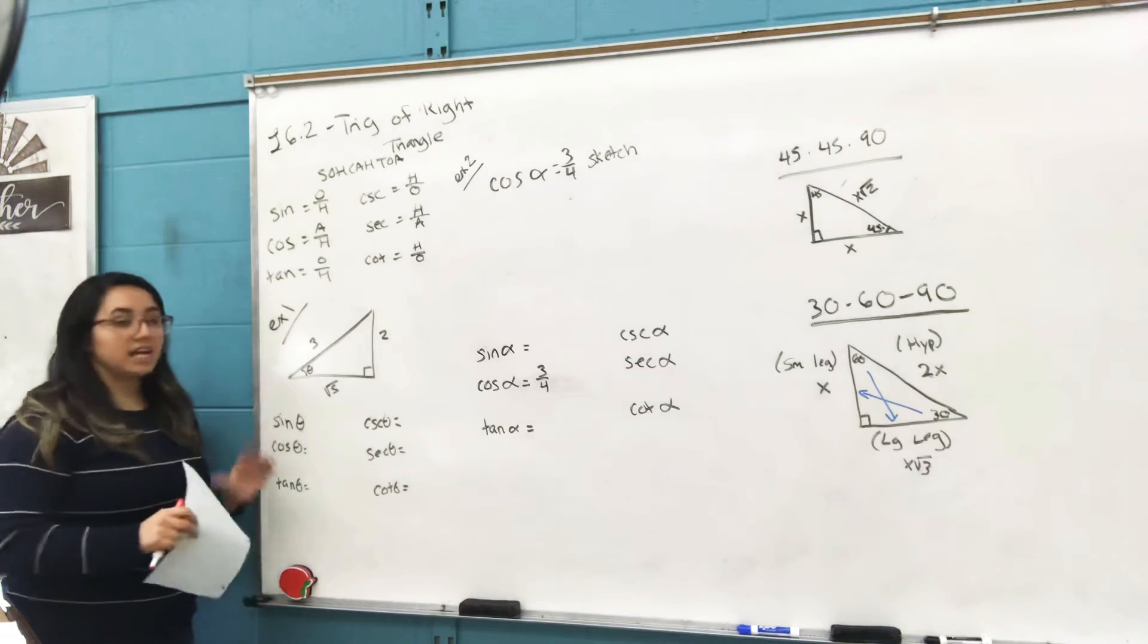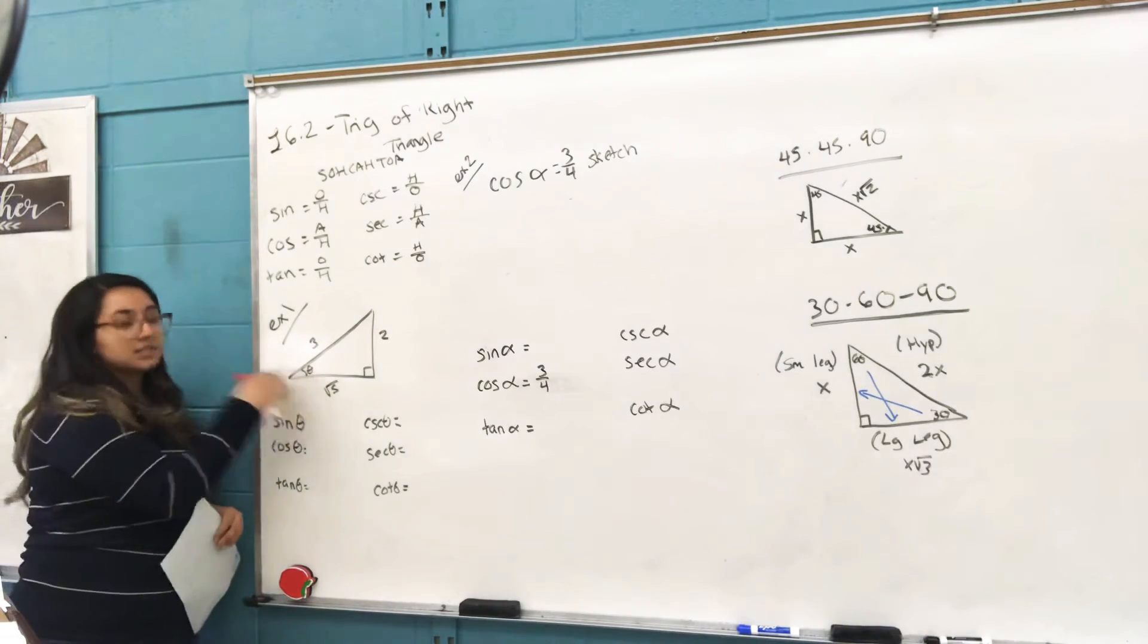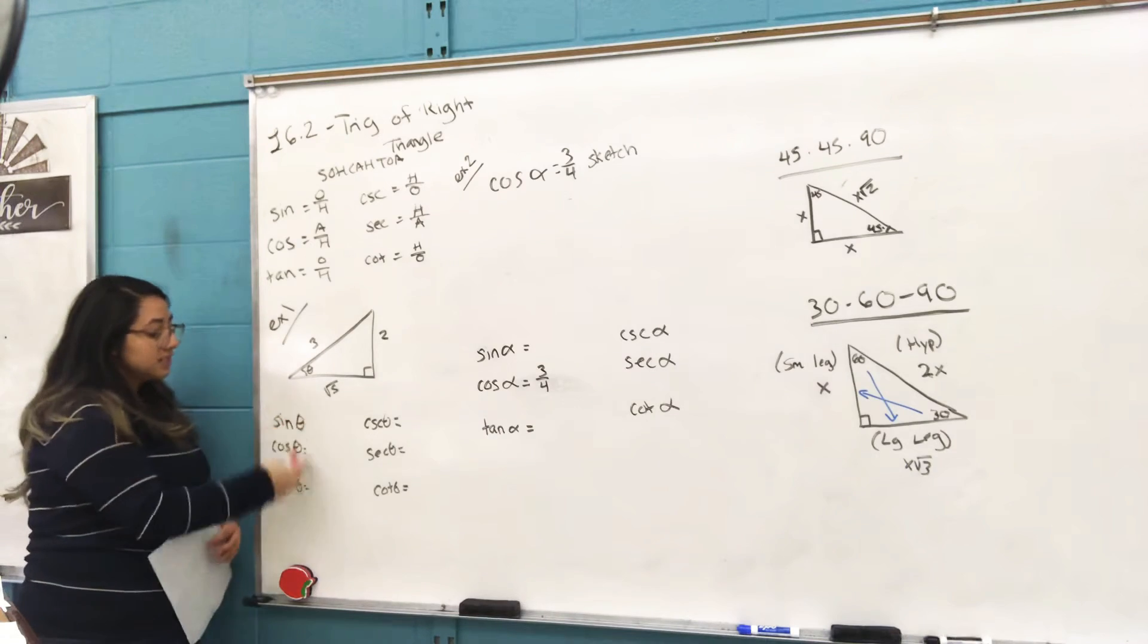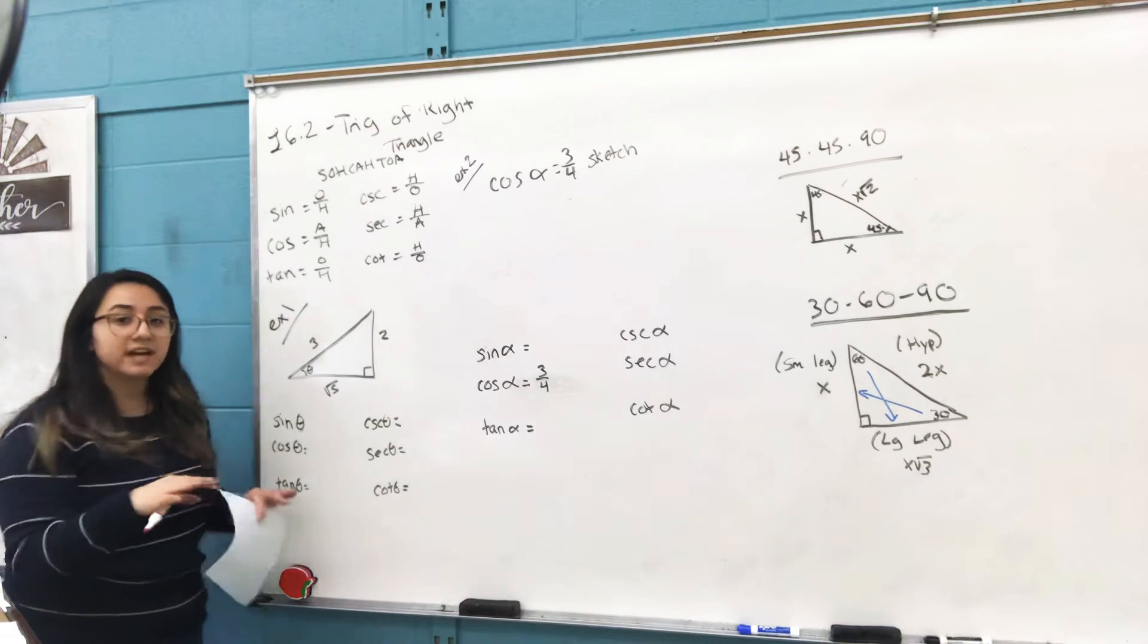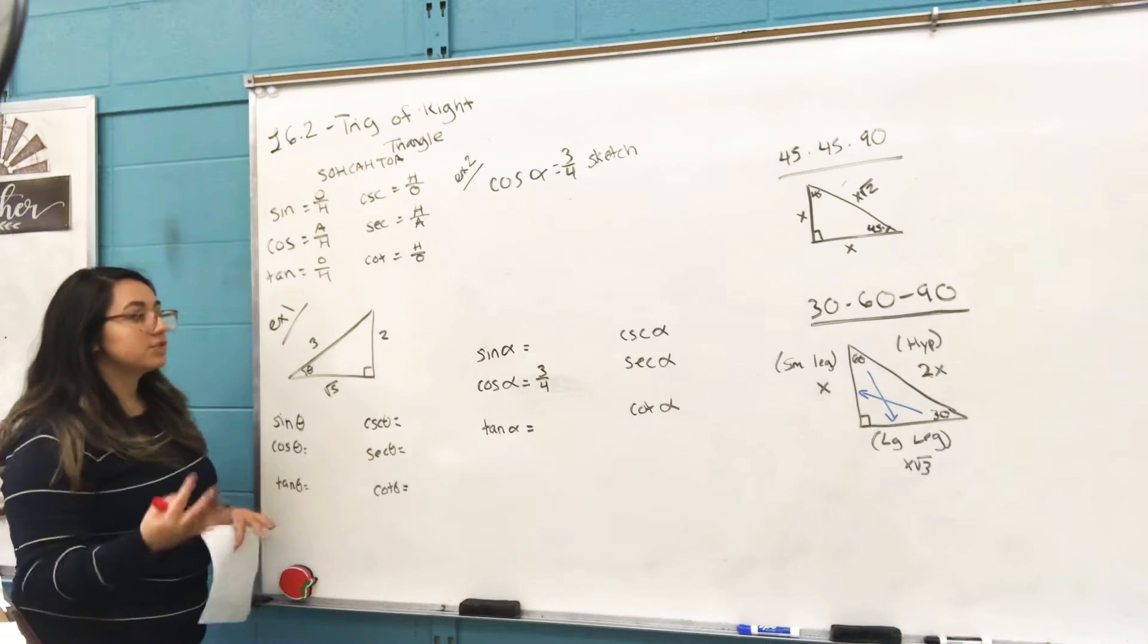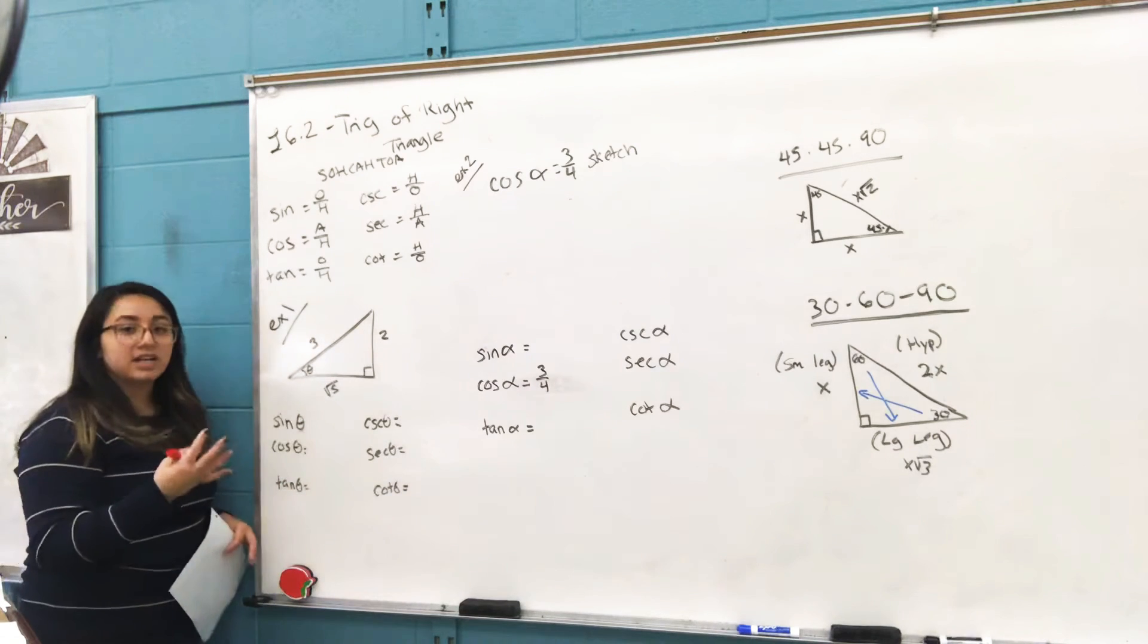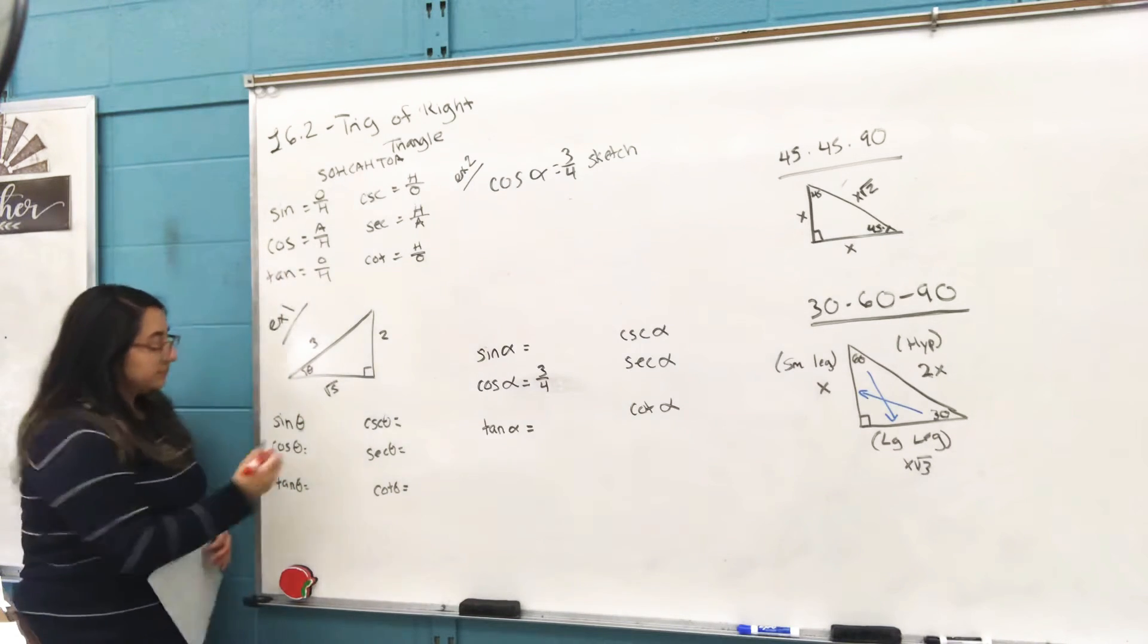Example one: we have this triangle here. This is considered theta here. It says find the six trig functions of theta. We're not using our calculators for these steps; we're just simply looking at it and creating ratios.